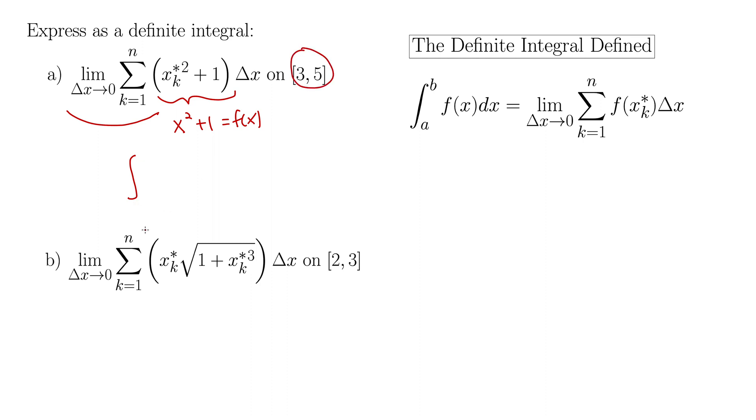Our limits of integration are here from 3 to 5 and then we put in our function. So we have x squared plus 1 and then the delta x becomes dx. All right, this always becomes dx.